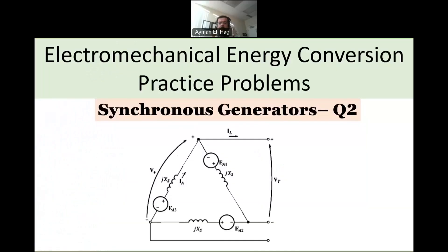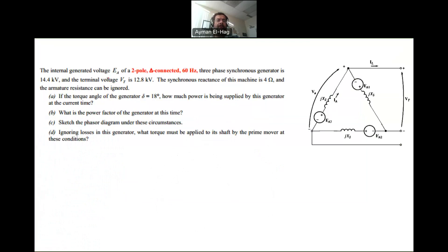Welcome back to the second question about synchronous generators. In this question, we have a delta connected generator, and we are given EA, the internally generated voltage, as 14.4 kV, and the terminal voltage as 12.8 kV.